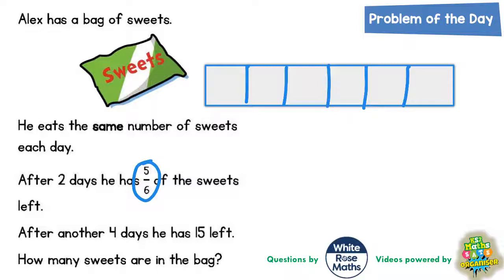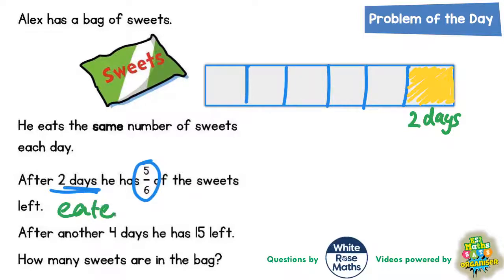After two days he's got five-sixths left, so in that first two days he must have eaten one-sixth. Let's rub off one-sixth on the end and write underneath 'two days.' It doesn't actually say that, but you can work it out — if he's got five-sixths left after two days, he must have eaten one-sixth. We've just tried to show that on our bar model.